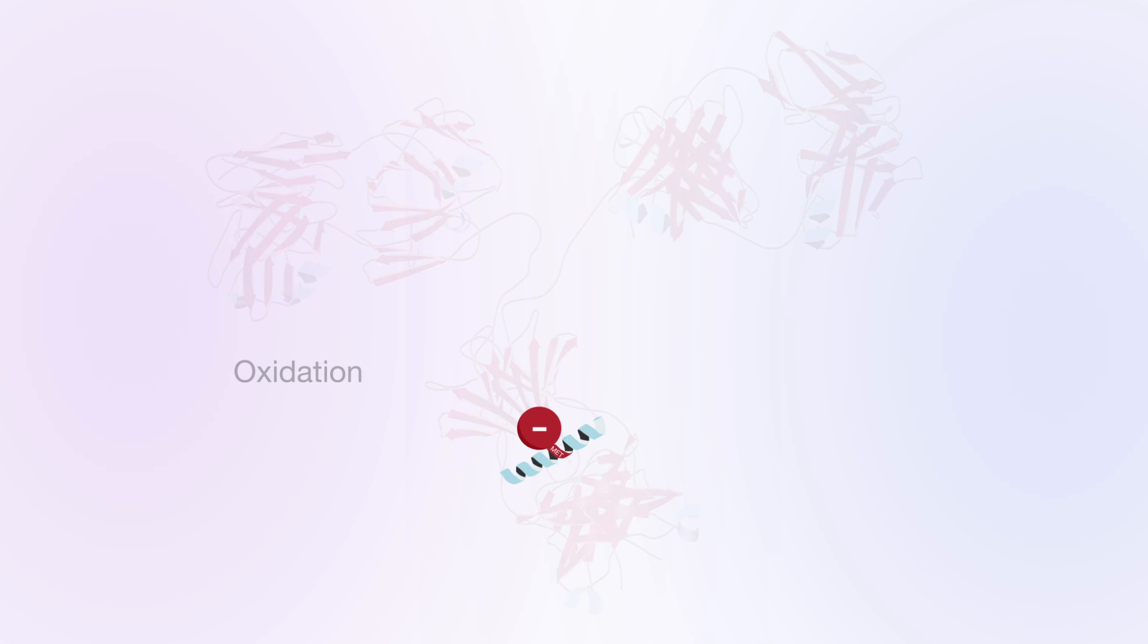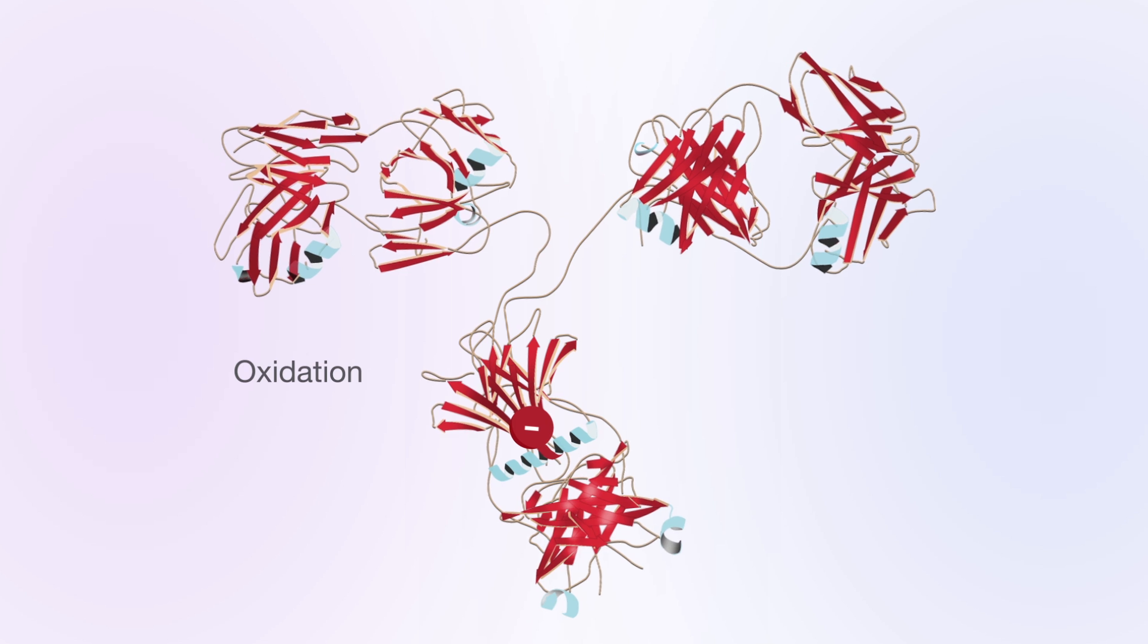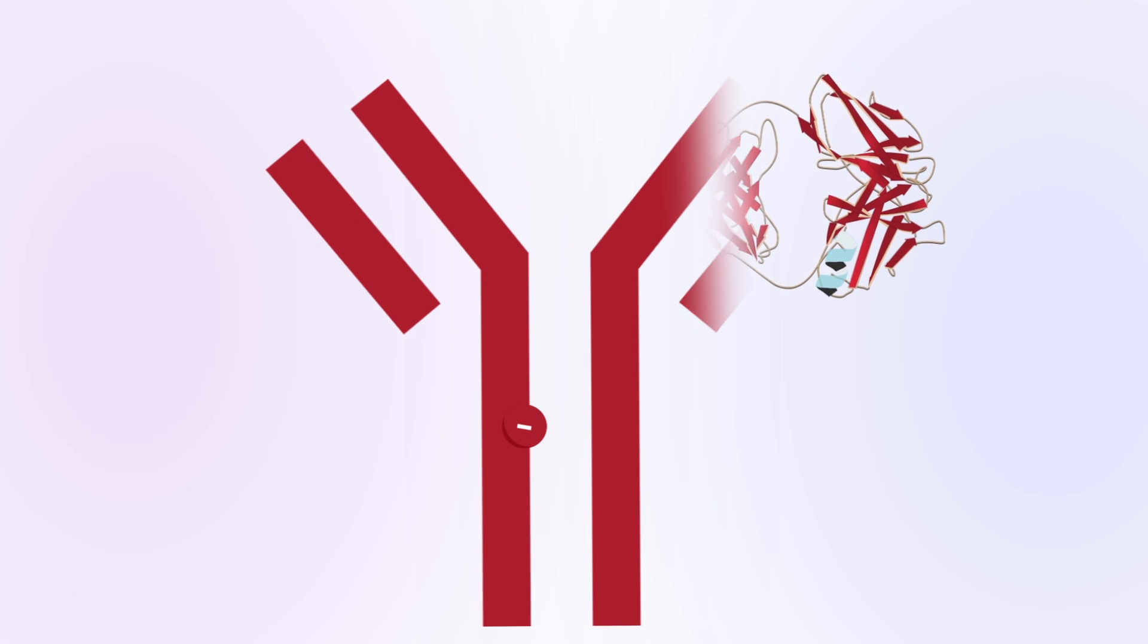Variables in cell culture conditions, such as temperature, can lead to protein modifications, such as oxidation, deamidation, or lysine truncation.